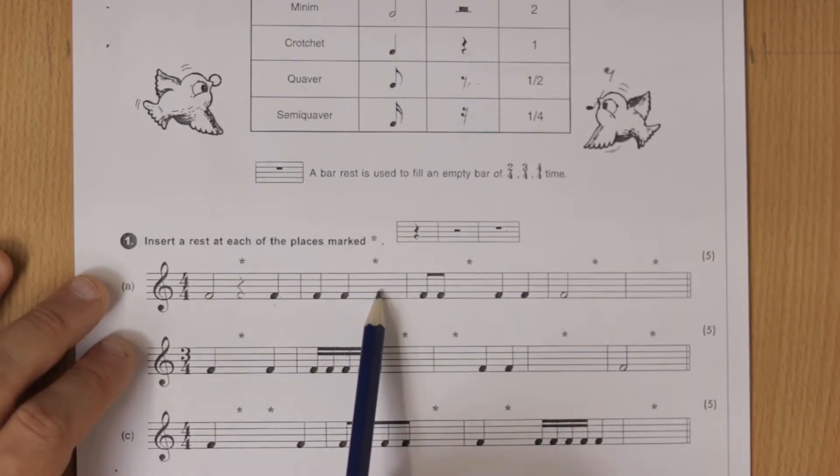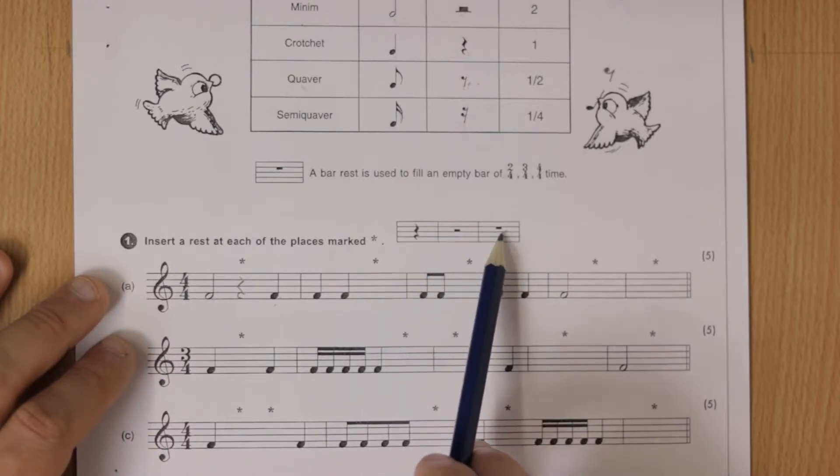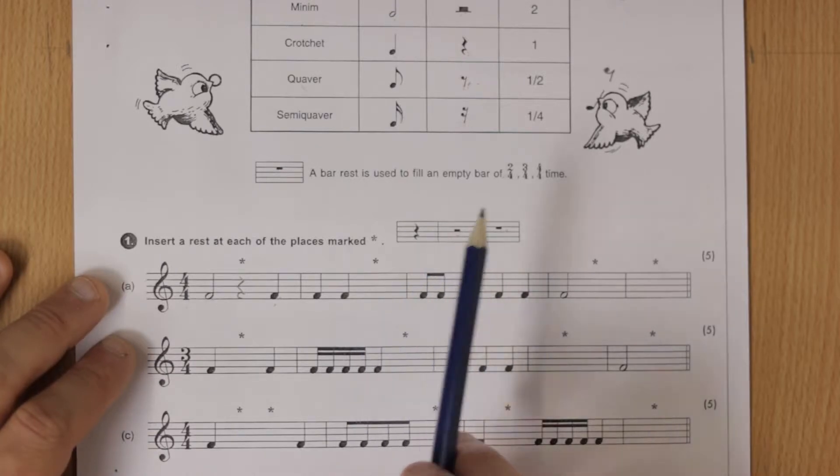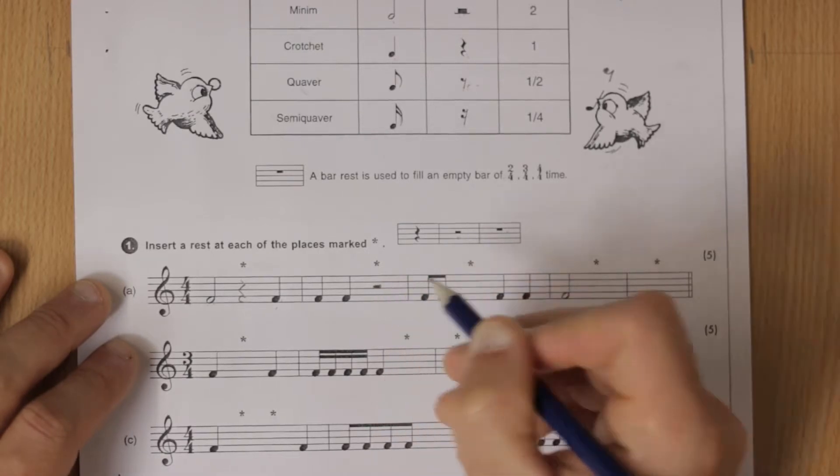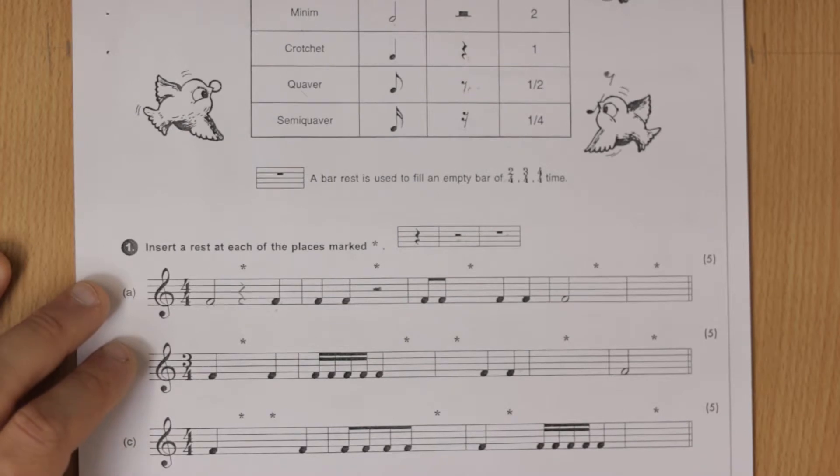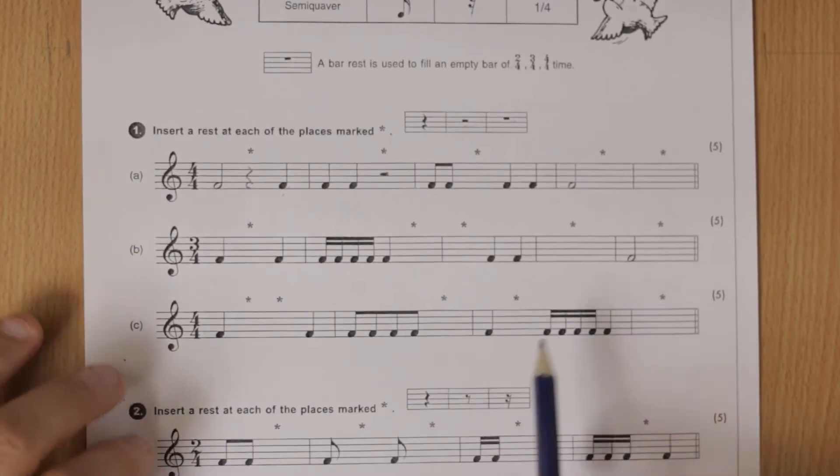So we need another two beats here so we need one of these—a two beat rest is a minim rest. So be careful how you draw it. It's on the middle line sitting on the middle line like that. All right and you can finish those off.